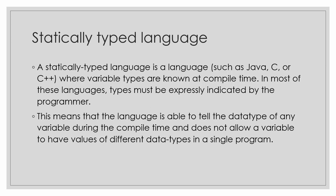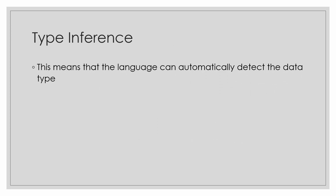Before compiling the code, we already know the variable types being used. This means the language is able to tell the data type of any variable during compile time and does not allow a variable to have values of different data types. For example, if I define an integer a equals five, before compiling the program the compiler knows that a is an integer. What is type inference? This means the language can automatically detect the data type — when I define a variable a equals five, the language detects that the data type of a is an integer.